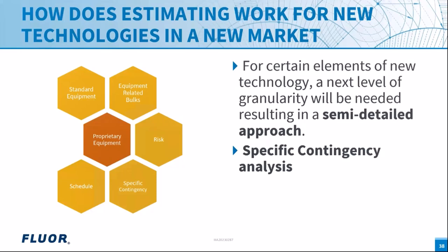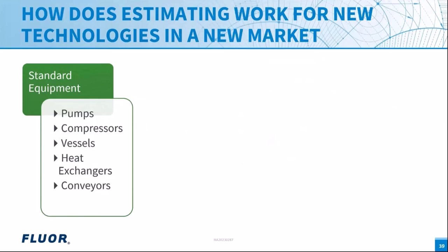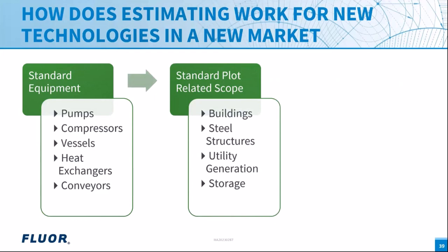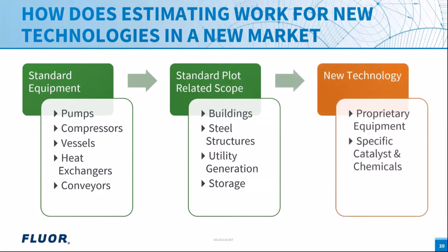In summary, most of the scope in a new technology project is standard: pumps, compressors, vessels, conveyors, buildings, steel structures, utility generation, fluid and gas storage — all covered under standard plot-related scope. Only a small portion is truly new technology: the proprietary equipment and specific catalysts or chemicals. This distinction is fundamental to how we approach estimating these projects.